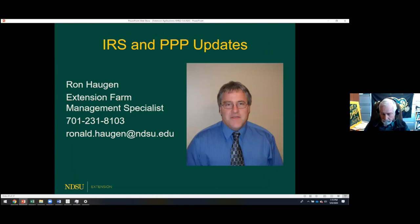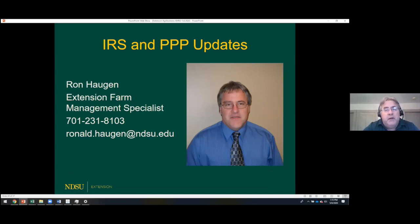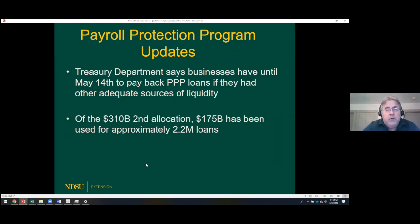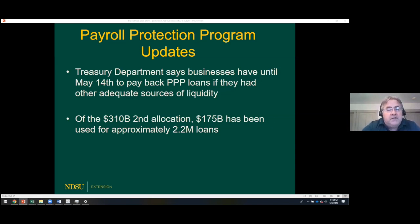Good afternoon. I'm Ron Haugen, extension farm management specialist with NDSU. I want to talk about IRS updates and Paycheck Protection Program updates. On PPP: the Treasury Department has said businesses will have until May 14th to pay back any PPP loans if they had other adequate sources of liquidity. They're trying to crack down on abuse. The deadline was originally May 7th but was extended to May 14th. The last allocation for PPP loans was $210 billion, of which $175 billion has been used for approximately 2.2 million loans.